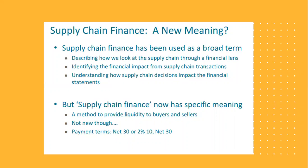Supply chain finance has basically been understood as how supply chain is impacting financial statements. But nowadays, in the recent past, this term has evolved and the meaning has changed. It has now become a much more specific meaning — supply chain finance really means it is a method to provide liquidity to both buyers and sellers. This is not something new per se; there are different ways that buyers and sellers try to increase their liquidity position, but the term and its meaning have evolved and changed.